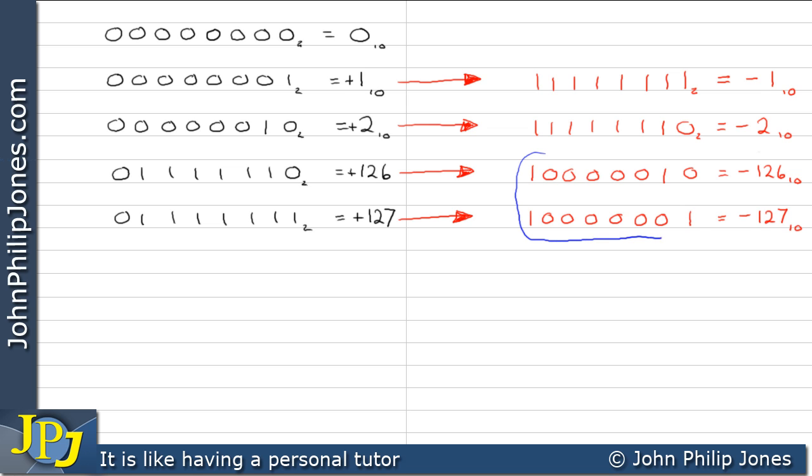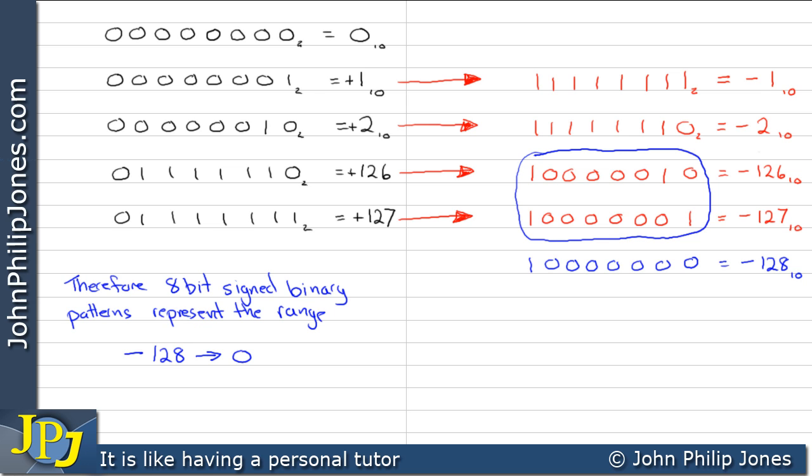If we look at these two bytes here, for minus 126 and 127, we should see a pattern, which should inform us that this pattern here must be minus 128. Therefore, 8-bit signed binary patterns represent the range starting from minus 128 going through 0 to plus 127.